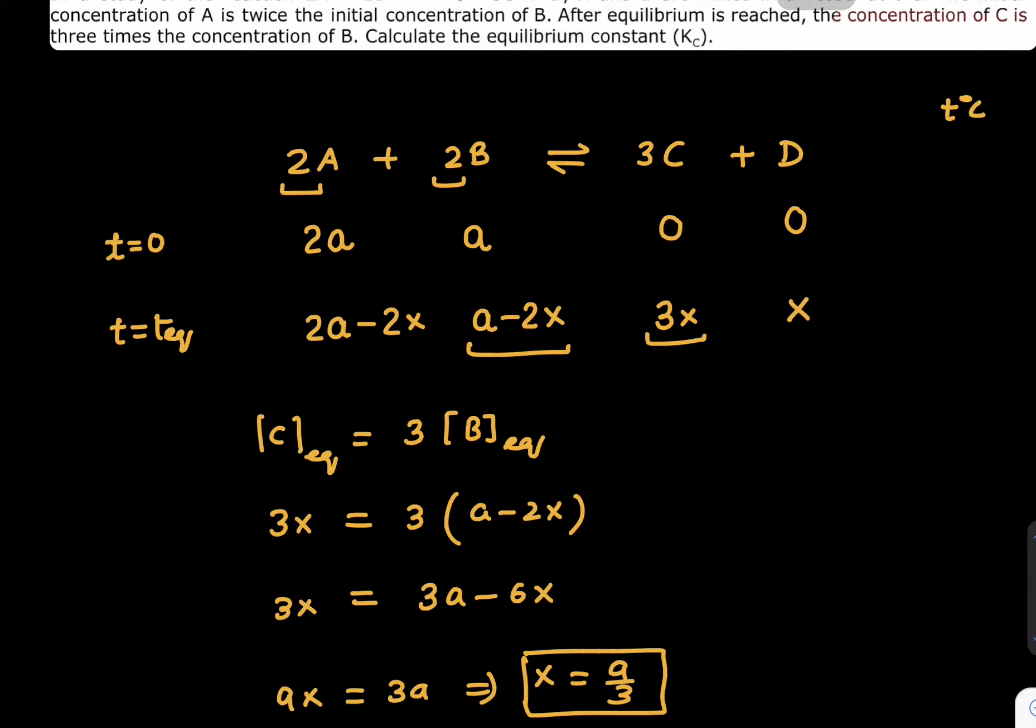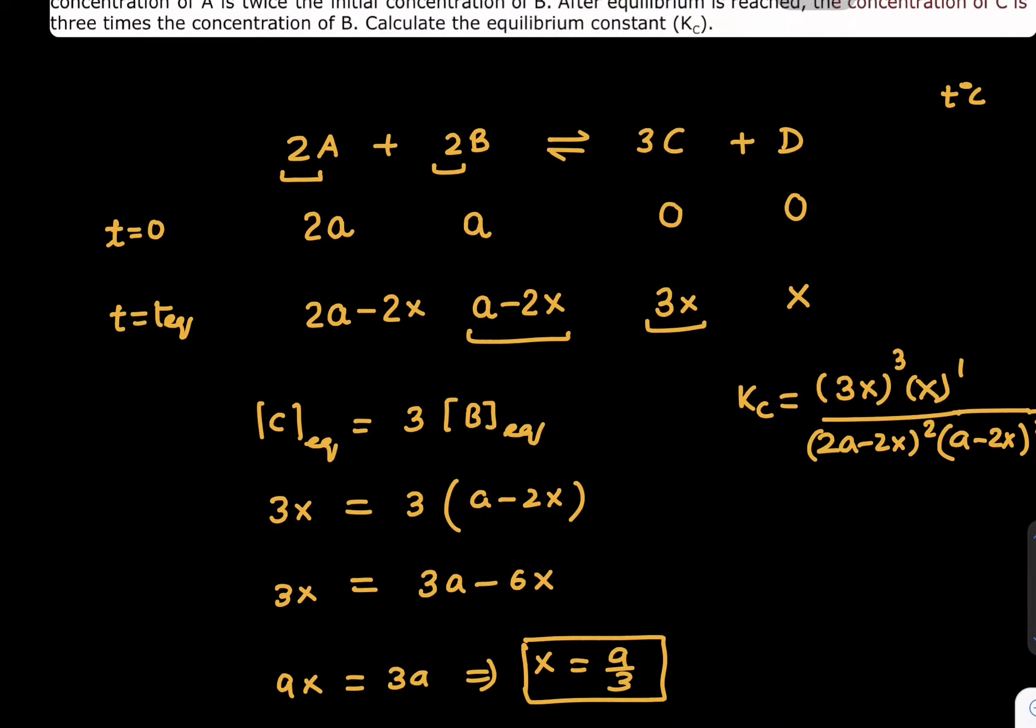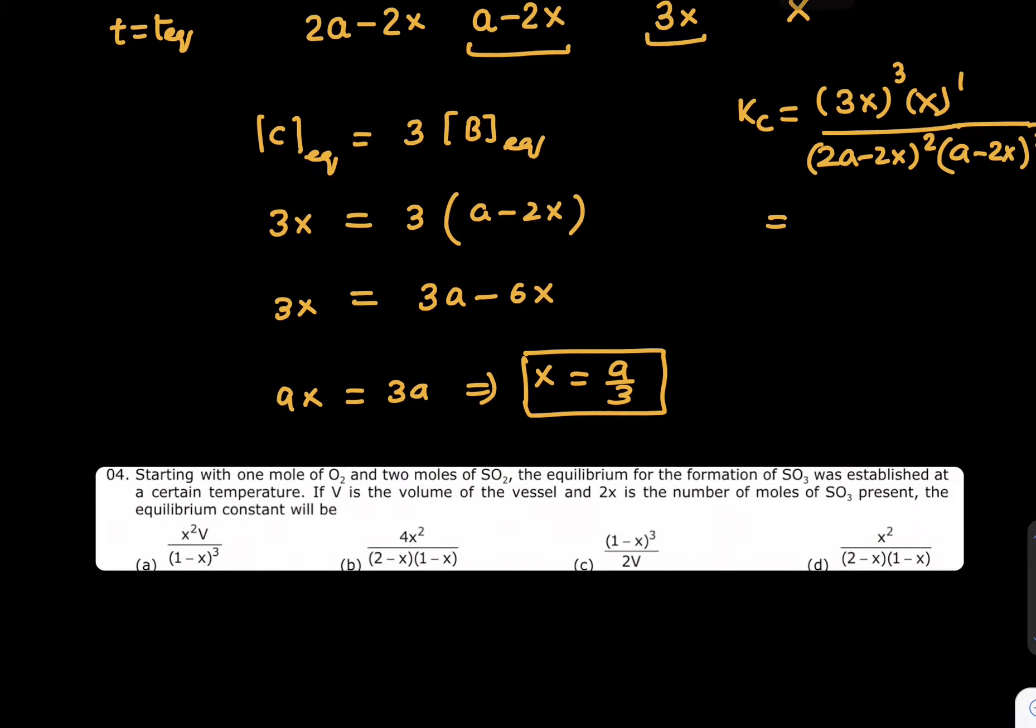Once you know x is a/3, calculate the equilibrium constant. That will not be difficult. What is the equilibrium constant? Kc = (3x)³(x)¹ / (2a - 2x)²(a - 2x)². As we know x = a/3, if you put this data, a cube times a will be there and below also a parts will get cancelled.